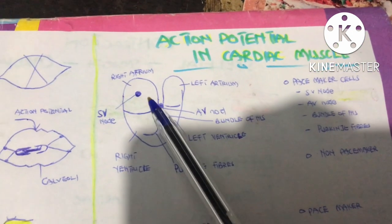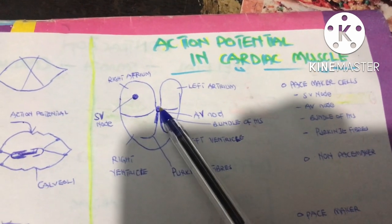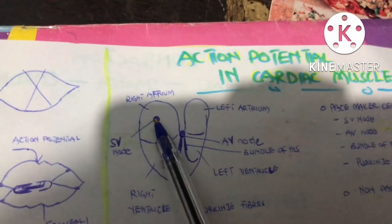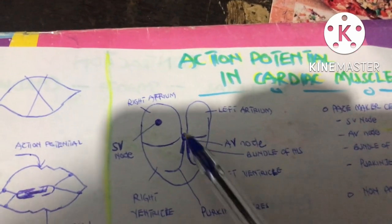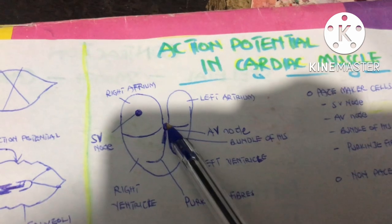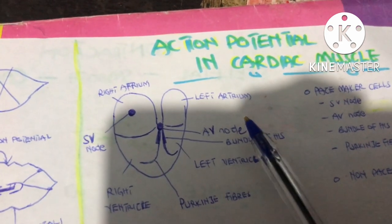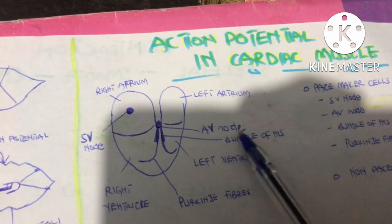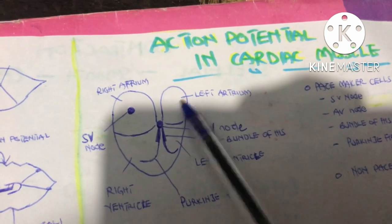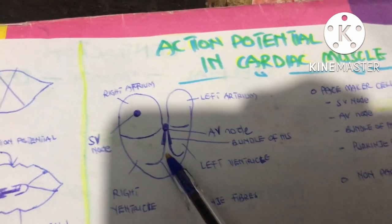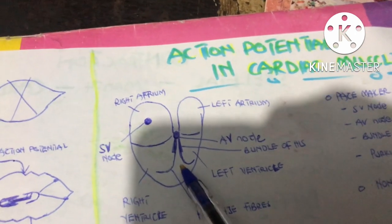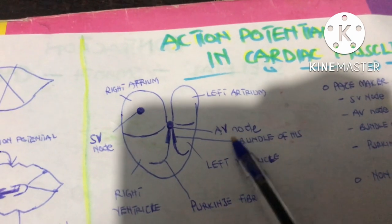The SA node generates the action potential and supplies it to the right atrium muscles, the left atrium muscles, and also to the AV node. The AV node waits for a short time — about 0.5 microseconds — to allow blood from the right atrium to move towards the ventricles, filling the right and left ventricles with blood.